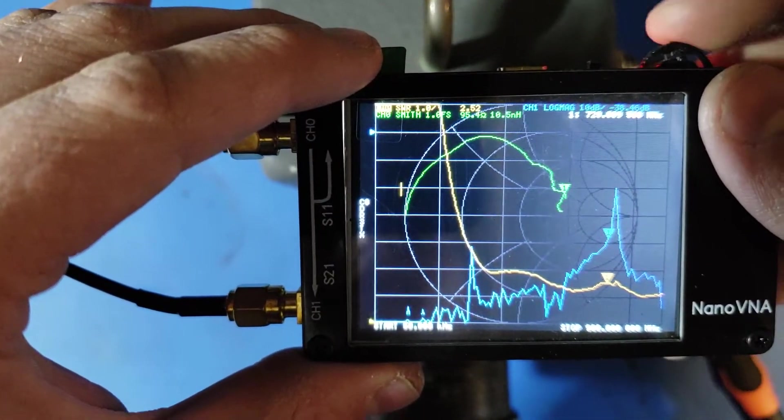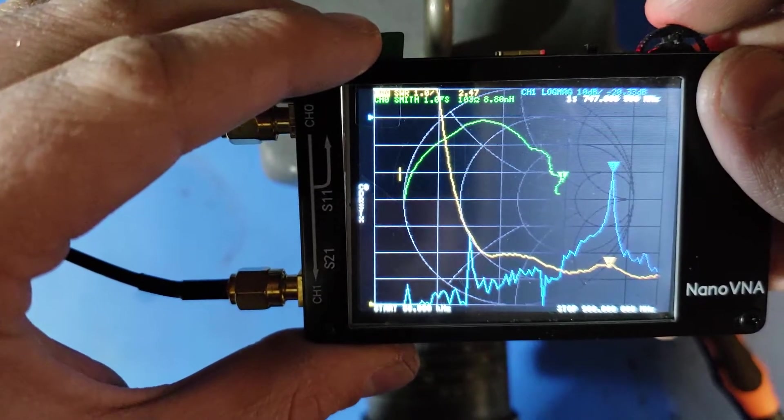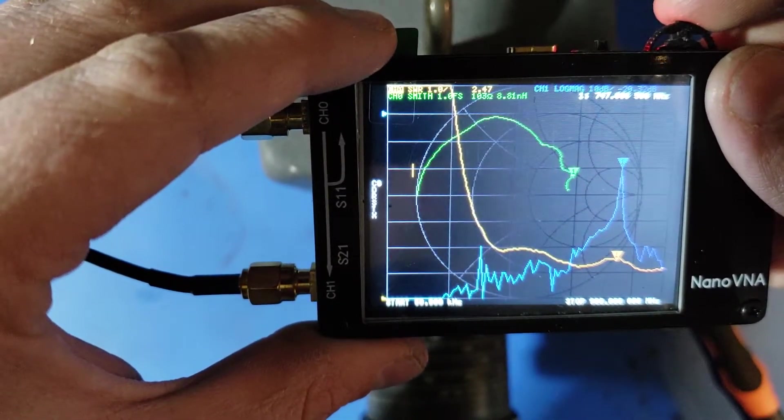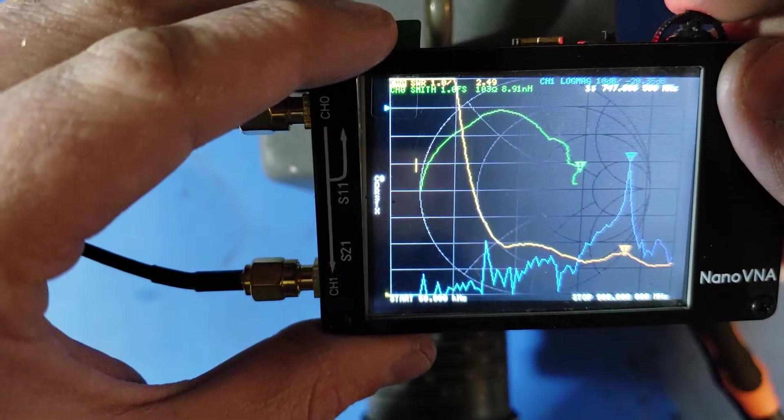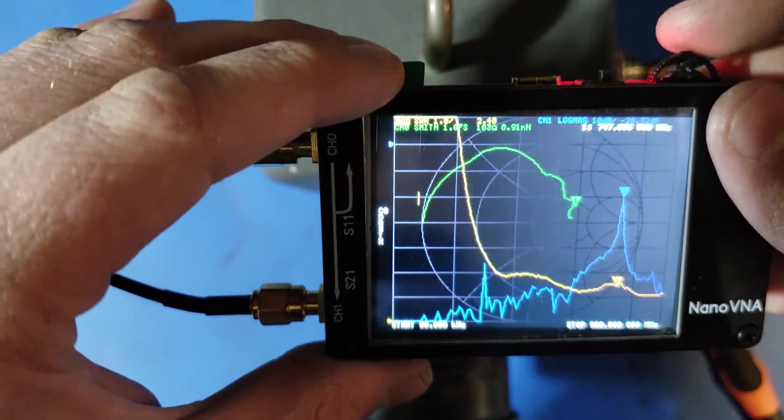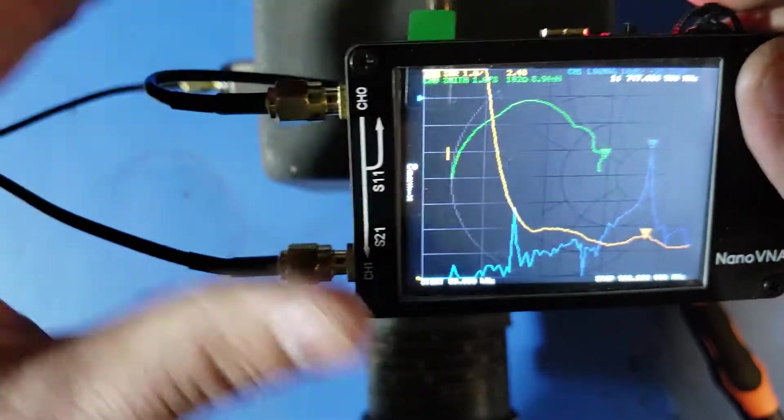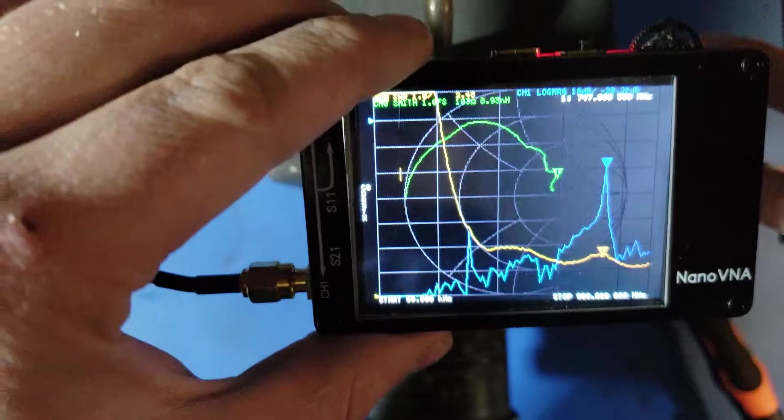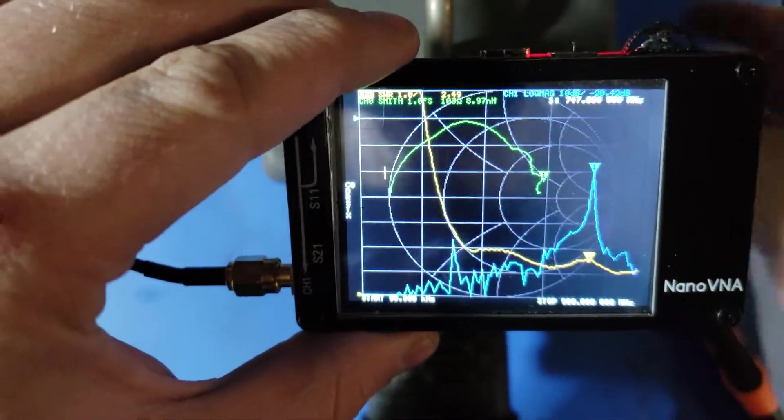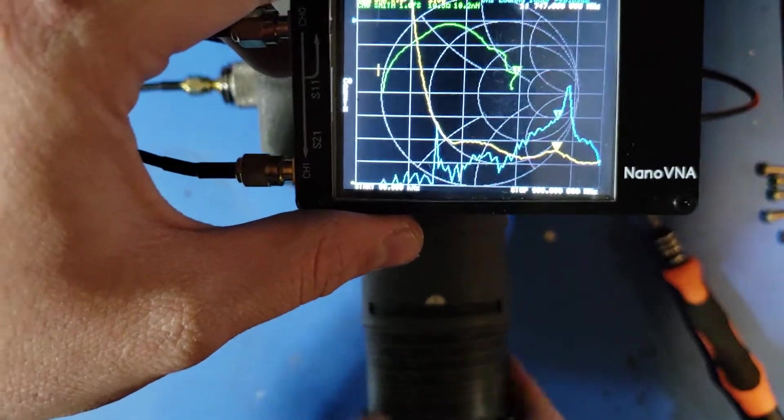The SWR at the center frequency, we're seeing minus 20. You can see it's not exactly matched. It tells us the impedance, and it's saying that it's 103 ohms and 8, 9 nanohenrys of inductance. And the SWR is like 2.5. So that is the center of the filter, but it's not exactly matched to the impedance that we want it to be.